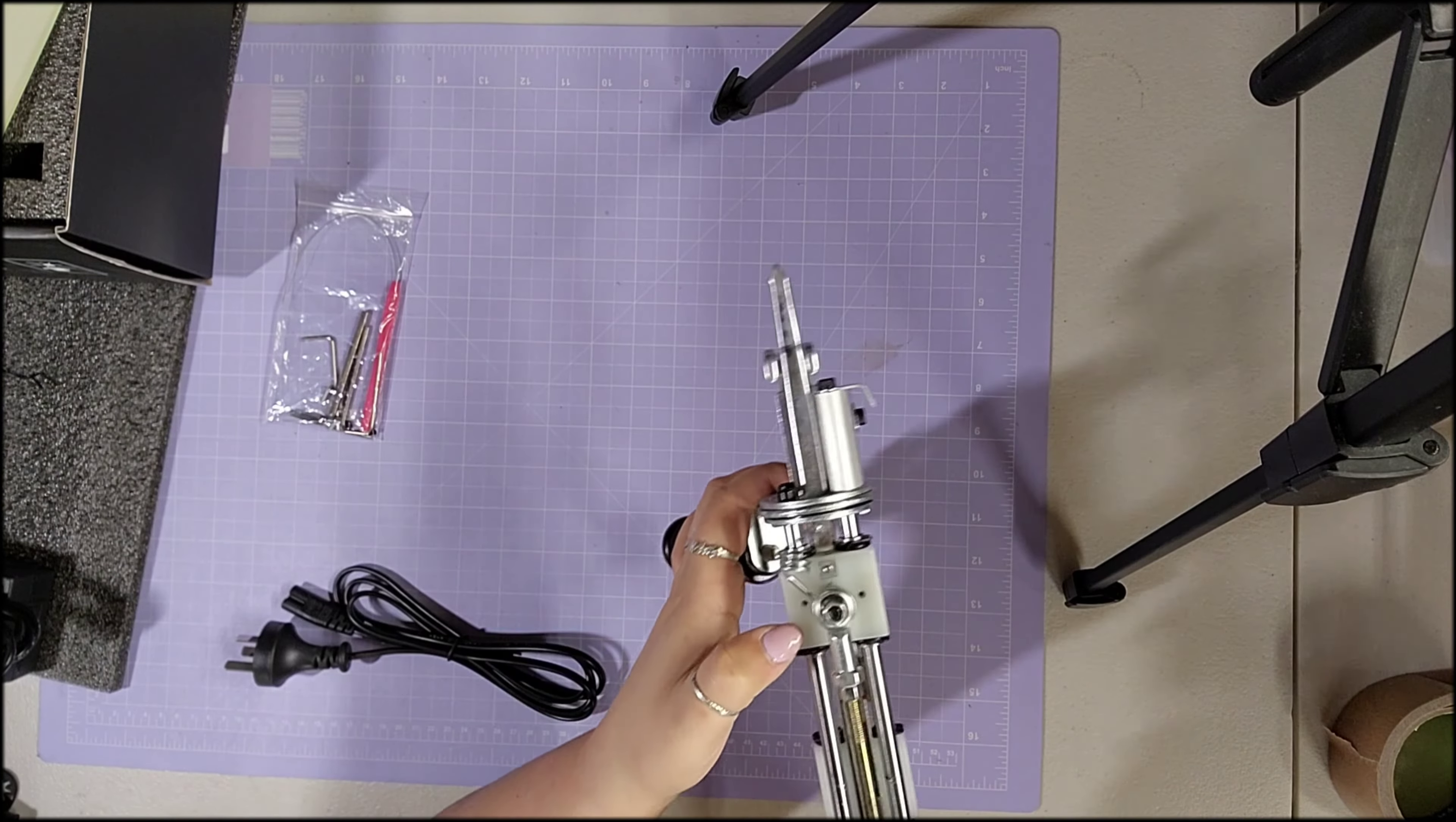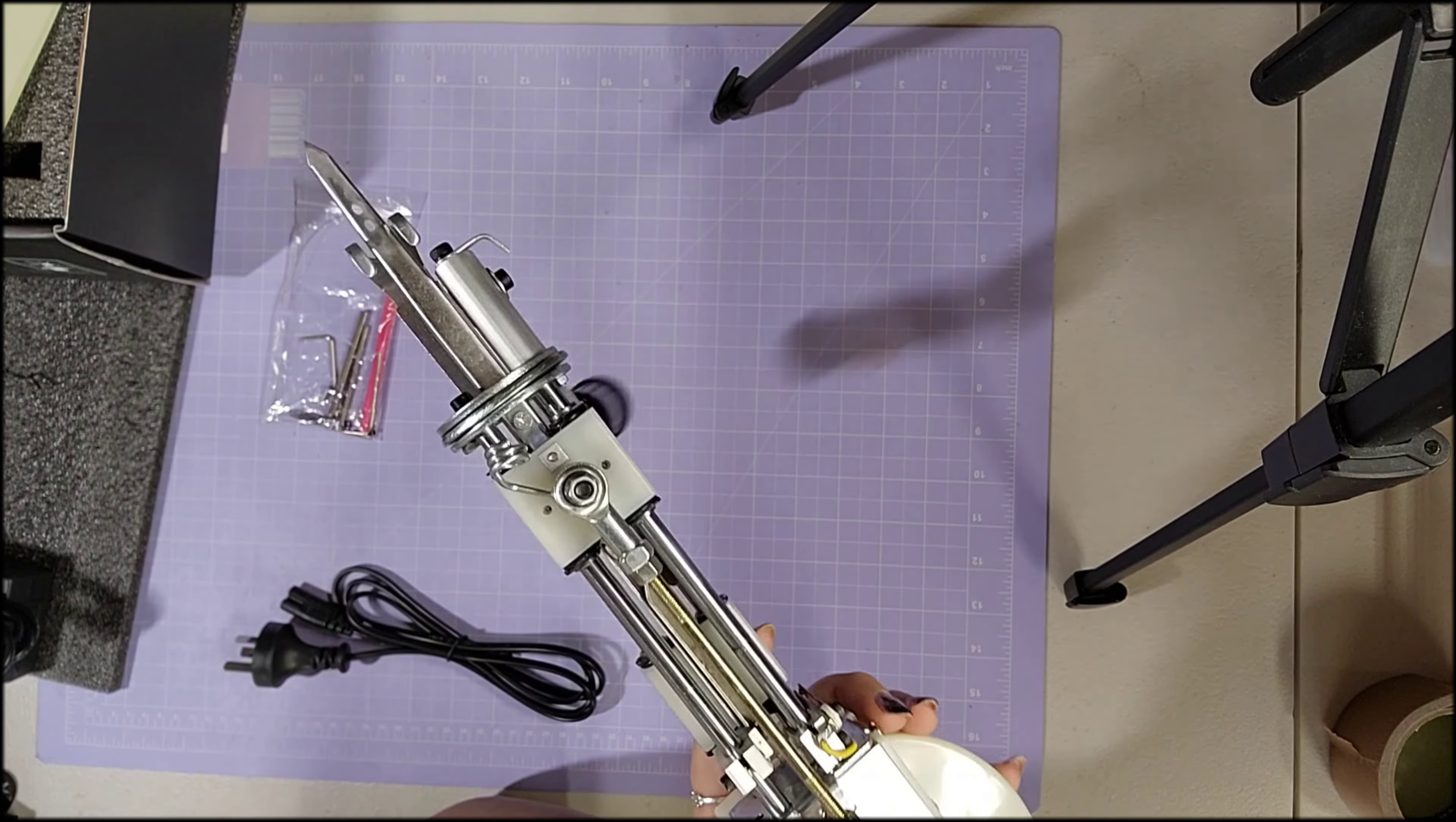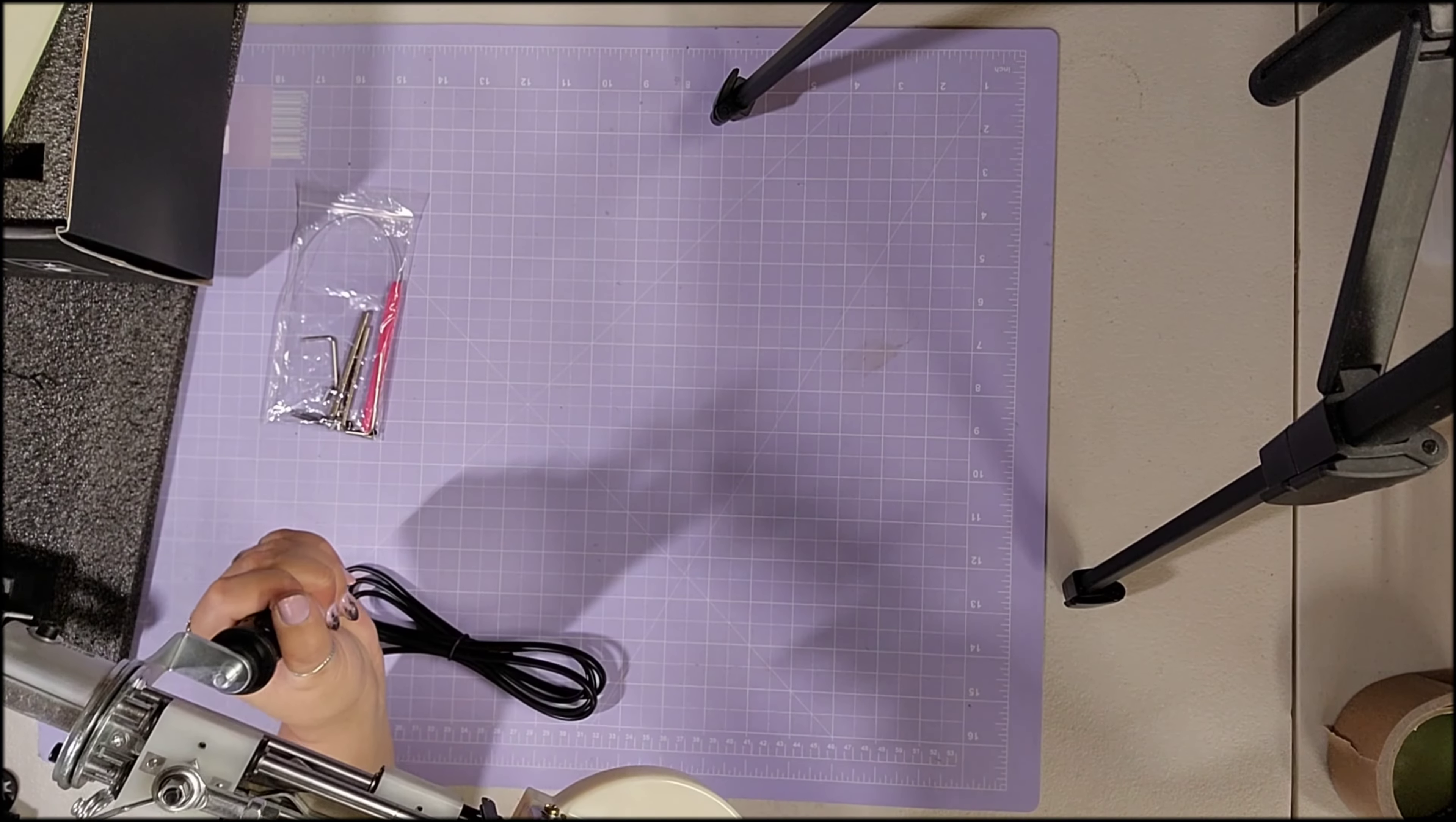Make sure you add oil in these tiny little holes there, there, and there at a drop. And they suggest every hour of tufting for this machine to add two drops of oil. Okay. So that's a bit more than probably what you do with an AK-1, which is every maybe one to two hours of tufting or two to three hours of tufting.